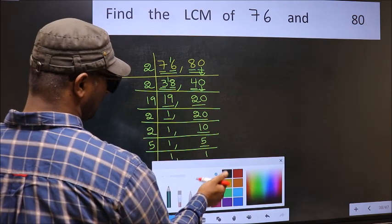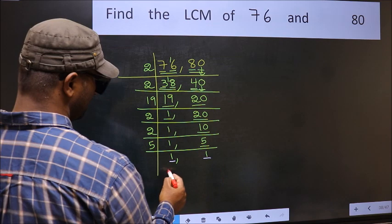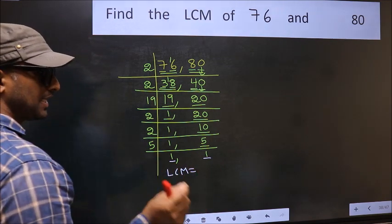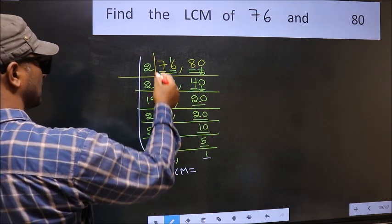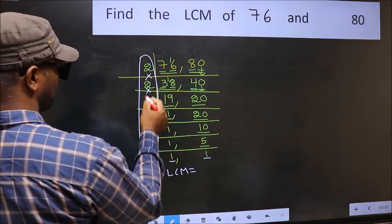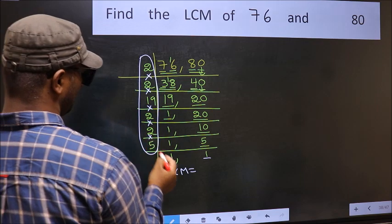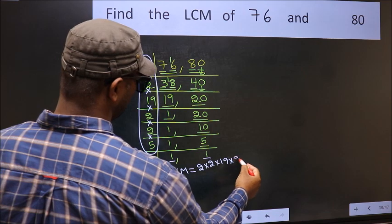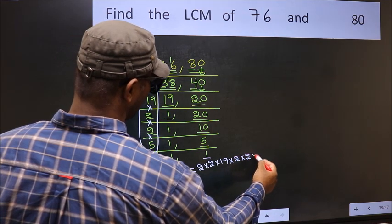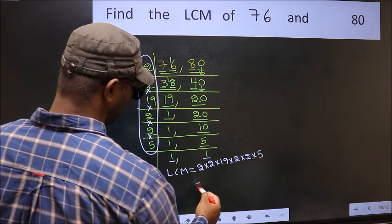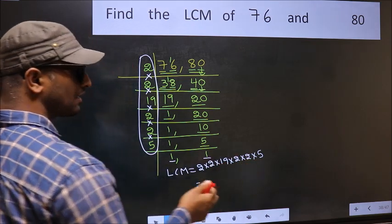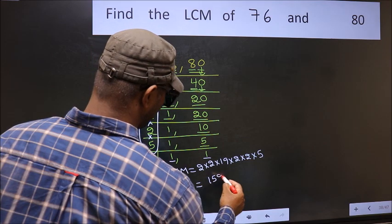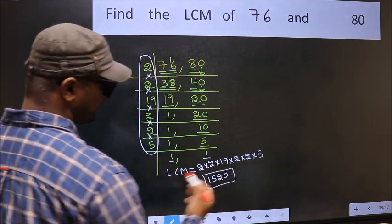So we got 1 in both places. Our LCM is the product of these numbers: 2 into 2 into 19 into 2 into 2 into 5. When we multiply these numbers we get 1520 as our LCM.